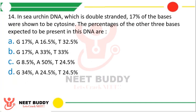Question 14: In sea urchin DNA, which is a double-stranded DNA, 17% of the bases were shown to be cytosine. The percentage of the other three bases expected to be present in this DNA? The correct answer is Option B: guanine would be 17%, adenine would be 33%, and thymine would be 33%.